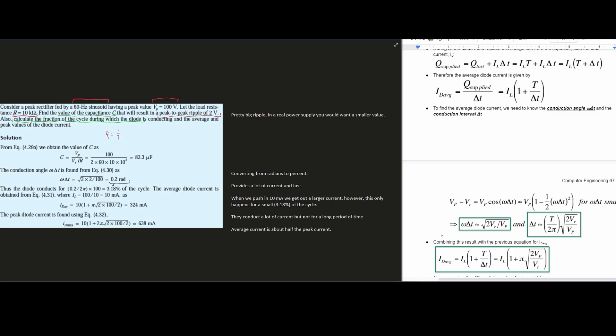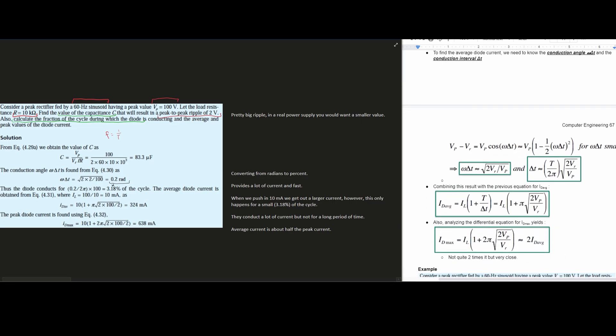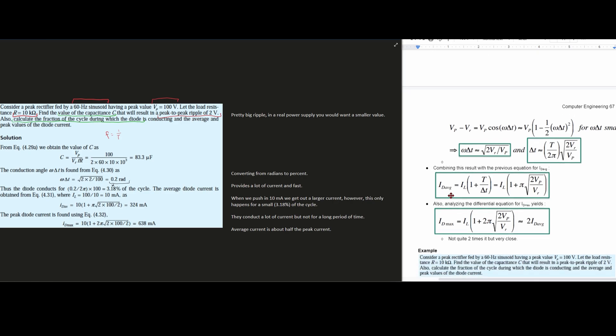The average diode current is obtained from our other equation. We have 4.31 in the book, but here it's going to be I_d_average. Our I_d_average is equal to these things. We have our I_L, and our I_L is just the voltage divided by resistance. That's Ohm's law. Voltage divided by resistance, we have our Vp as 100 volts, and our resistance as 10 kilo ohms. That's going to give us 10 milliamps.